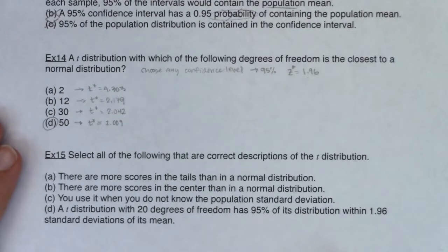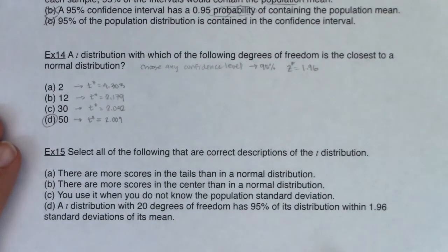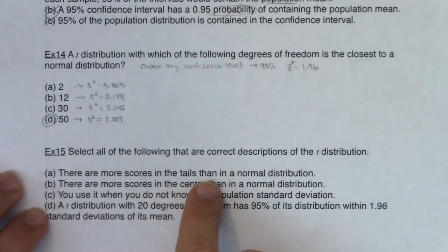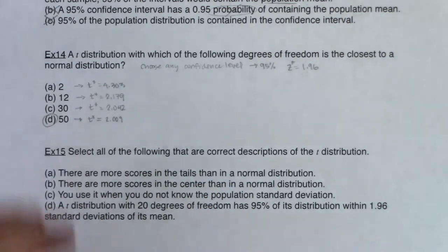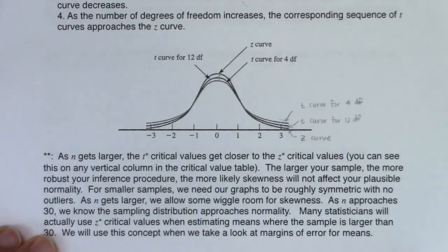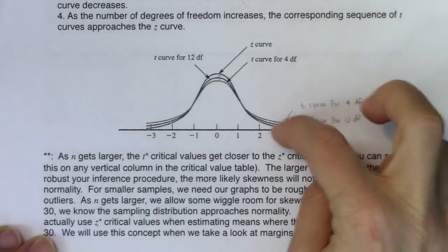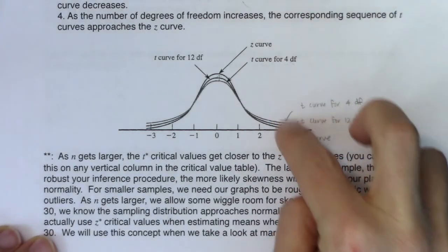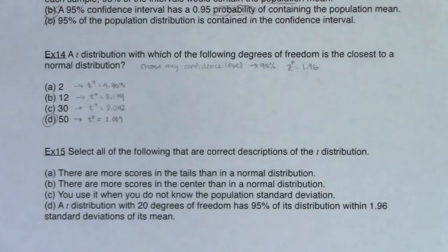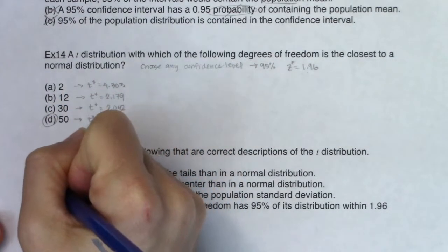So let's look at some properties of the T distribution and see if we can figure out what's correct. Select all of the following that are correct descriptions of the T distribution. First: there are more scores in the tails than in the normal distribution. Are there more scores in the tails? Yes, because the tails are higher — they have a higher relative frequency count, the Y values are higher. So there are more scores in the tails. That one is true.